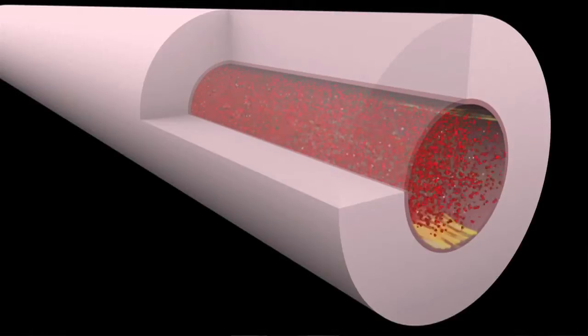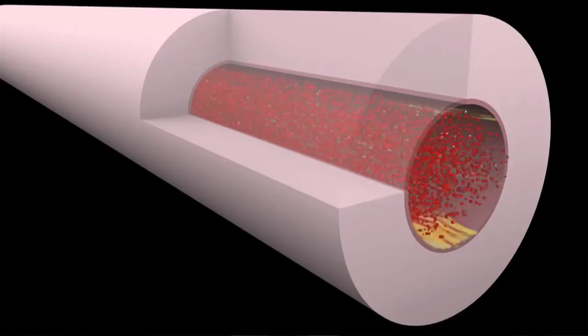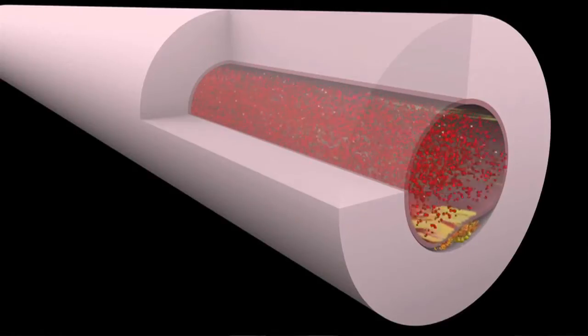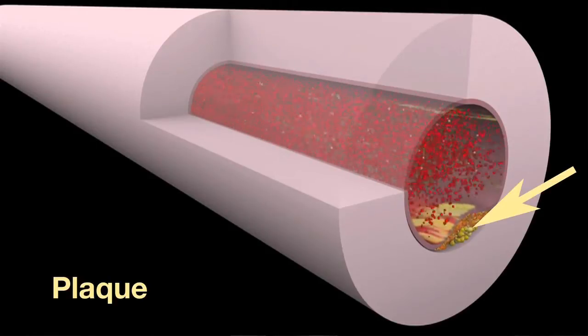When cholesterol gets into the wall of an artery, the wall becomes inflamed. The inflammation turns the fatty streak into a cholesterol-filled plaque.